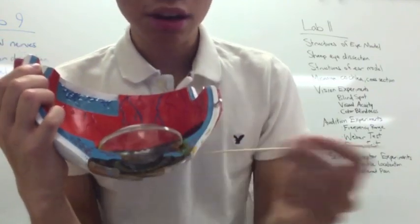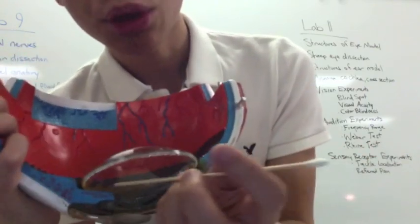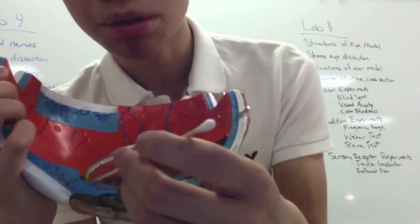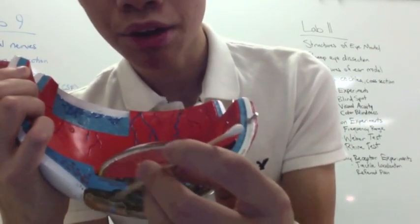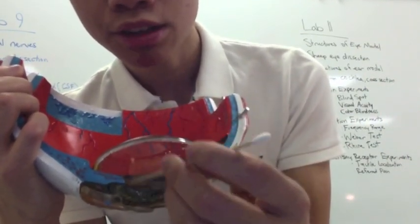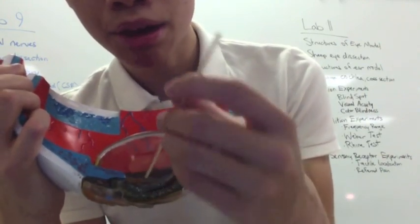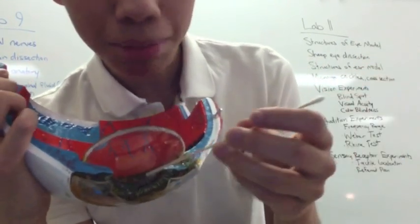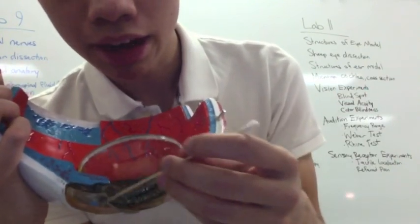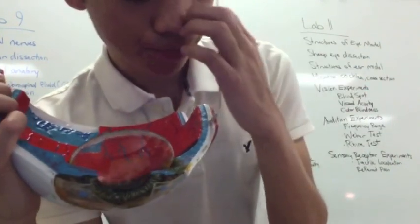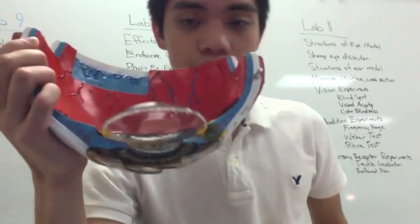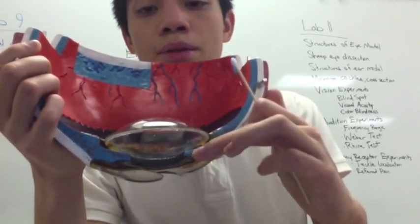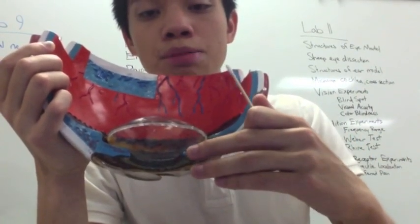The fluid in these front chambers is called your aqueous humor. The aqueous humor flows from your posterior chamber into your anterior chamber — it goes through your pupil and out through the anterior chamber. The posterior chamber is between your iris and your lens, while the anterior chamber is between your cornea and your iris.